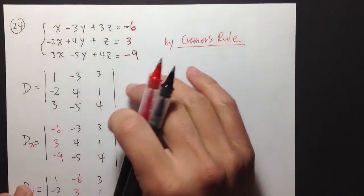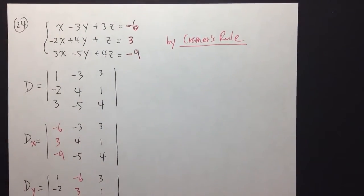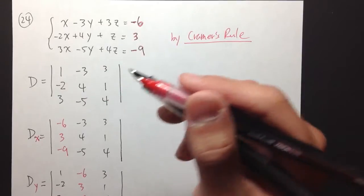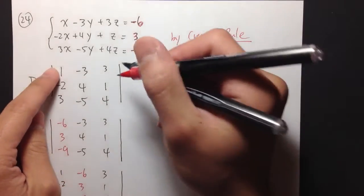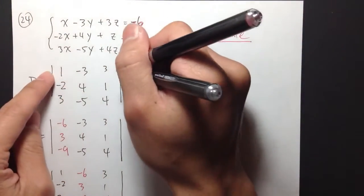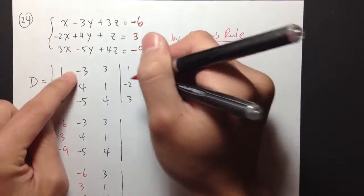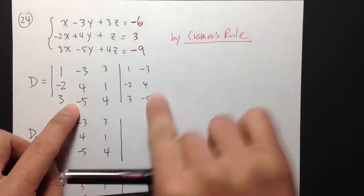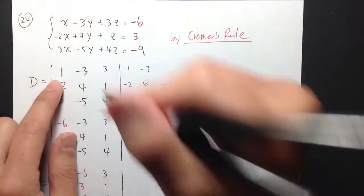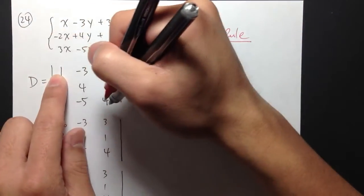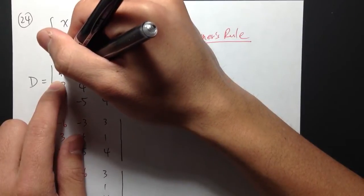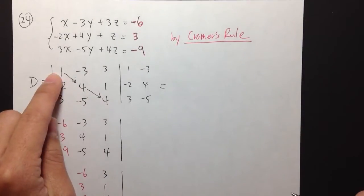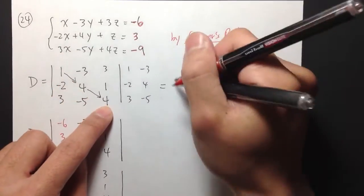What's next is we are going to compute the determinant of each matrix. To compute the determinant of a 3×3 matrix, we use the diagonal method. I first write down the first two columns duplicated to the right of the matrix. Then I look at the left-to-right diagonals. The first product is 1 times 4 times 4, which equals 16.